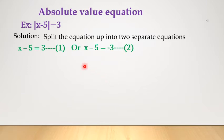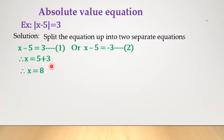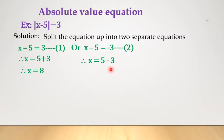First, we solve Equation 1: x minus 5 equals 3, therefore x equals 5 plus 3, therefore x equals 8. For Equation 2: x minus 5 equals minus 3, therefore x equals 5 minus 3, therefore x equals 2. We got two values of x.